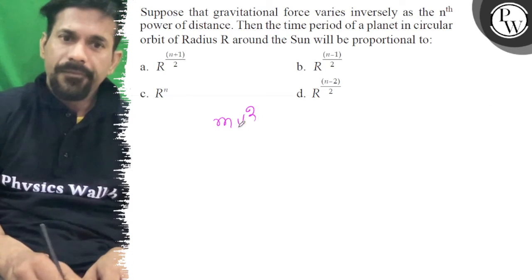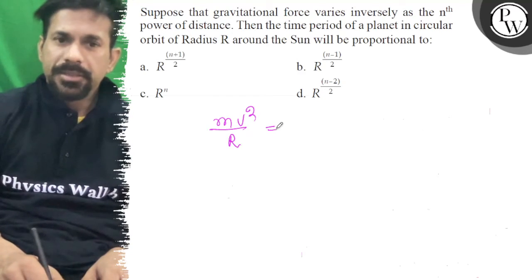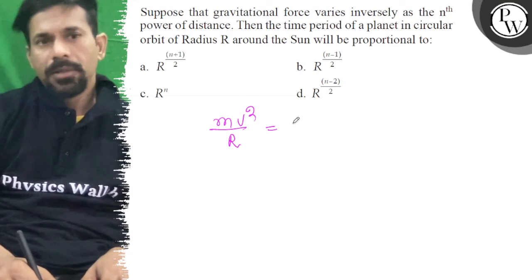So we know that the centripetal force is equal to mv squared upon r. That is given by the centripetal force, which is the attraction force.